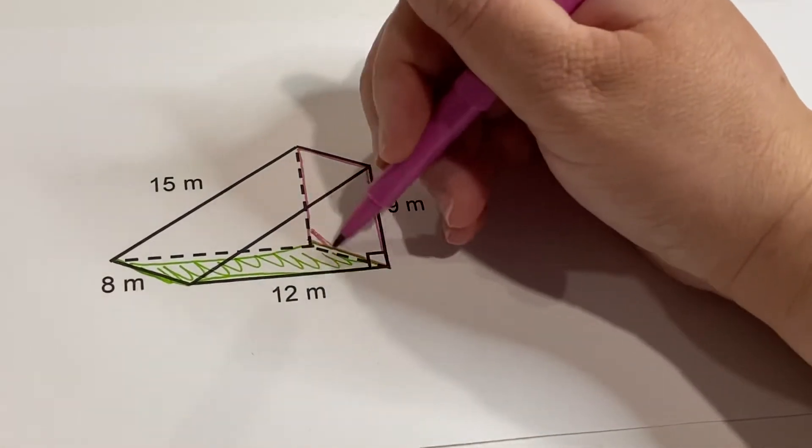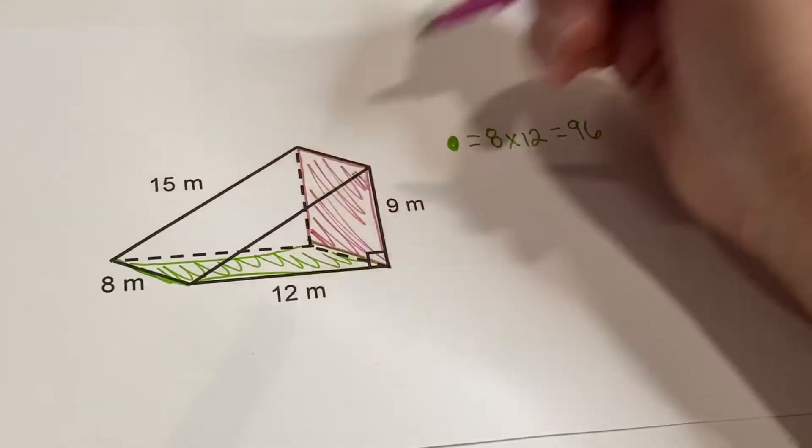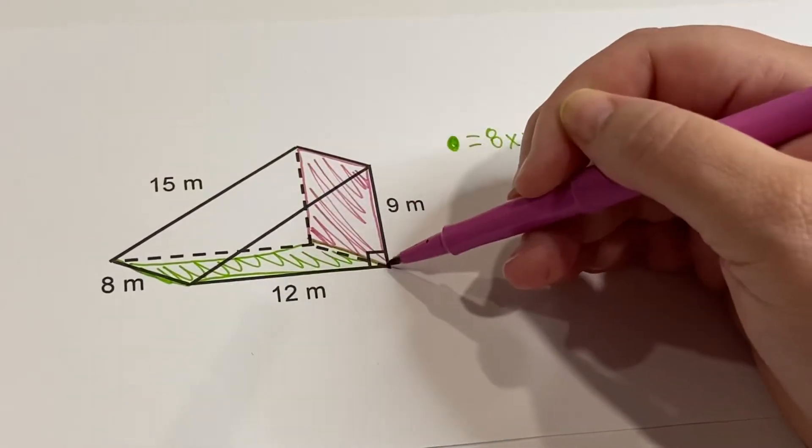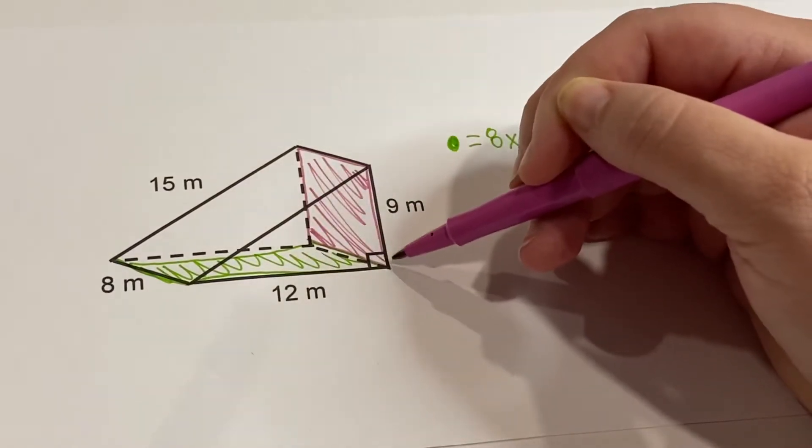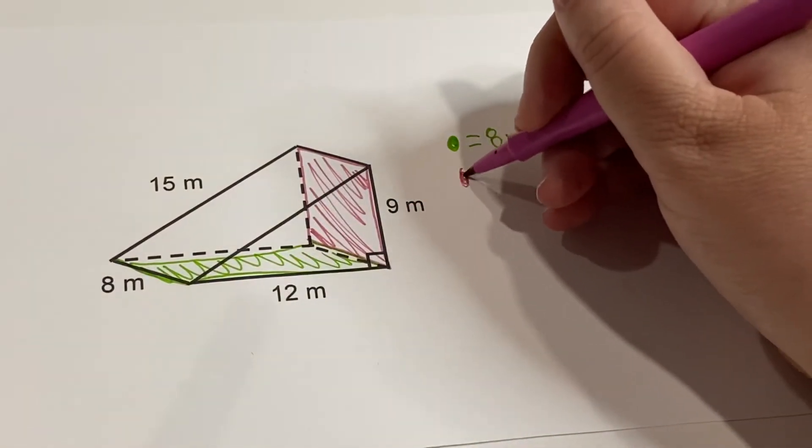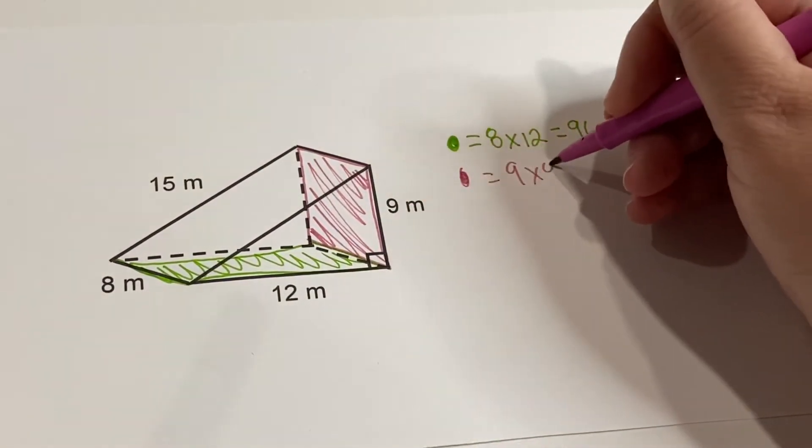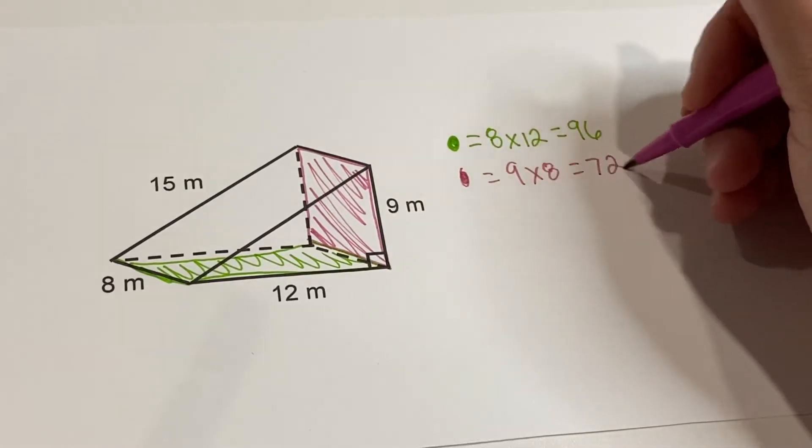We'll just shade it in so you can see which one that is. And this one is 9 by 8 because this 8 is the same as this one. So this is going to be 9 by 8, which equals 72.